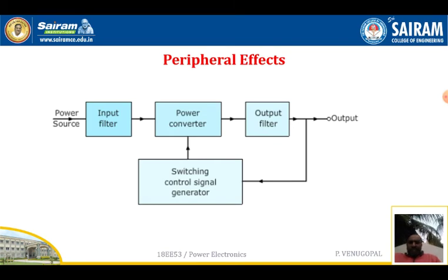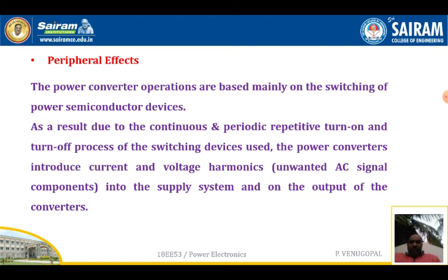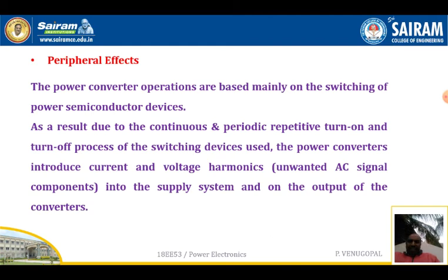Now let us look at peripheral effects. The block diagram of the power electronic system includes an input filter, a power converter, and an output filter. The power converter converts power from one form to another suitable to run the load. During switching of power semiconductor devices, we observe many harmonics and distortions — these distortions are the peripheral effects. Power converter operations are based mainly on switching of power semiconductor devices such as thyristor, SCR, GTO, and MOSFET.